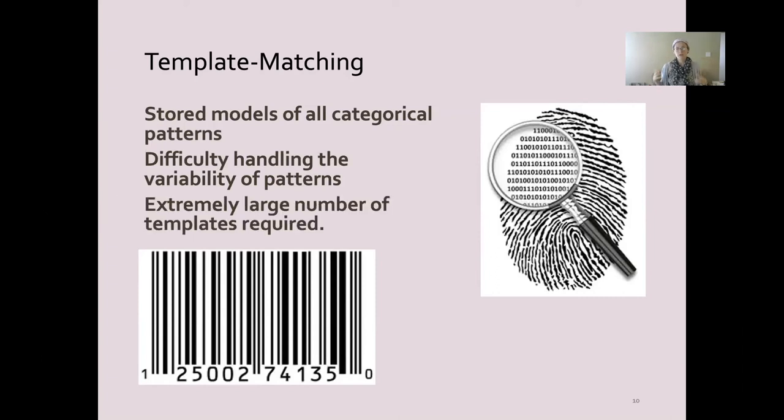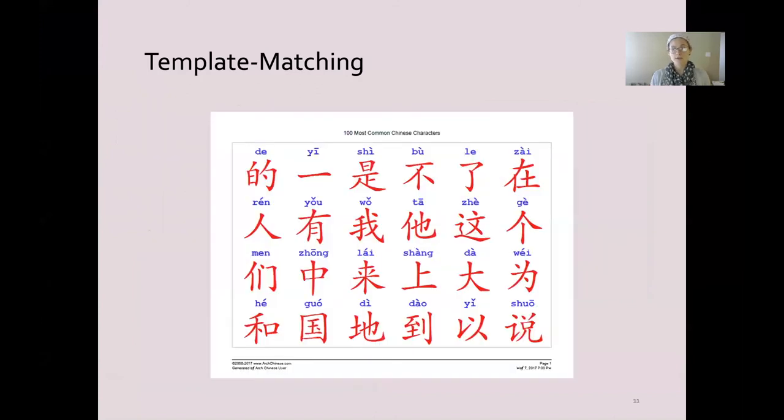You would have to have an extremely large number of these templates stored, however. So if we were to apply this template matching model to things like reading and handwriting again, I would have to memorize about 80,000 Chinese characters in order to recognize them according to this view. I would not be recognizing them by their features, by their chunks that are similar to each other, like recognition by components, but instead I would have a unique template for every single one.